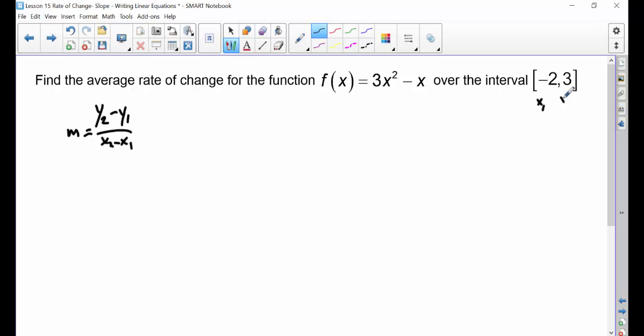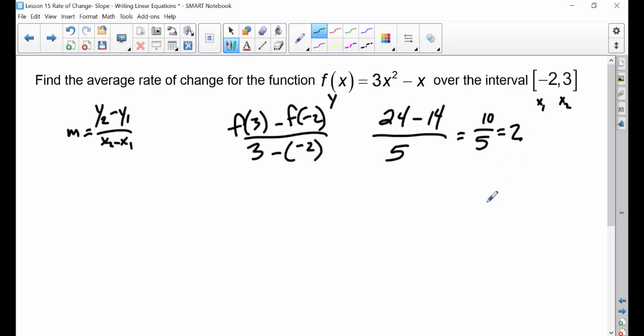So this is like x₁ and x₂, which means I need my y values. Well, we know f(x) is equal to y. So if I plug these x values in for that function for x, I'll get my y values out. So basically what I'm doing is I'm taking [f(3) - f(-2)]/(3 - (-2)). And when I do that, f(3) I believe gets me 24, f(-2) is I think 14, and that's all over 5, which is 10/5 or 2. And that's all there is to it.